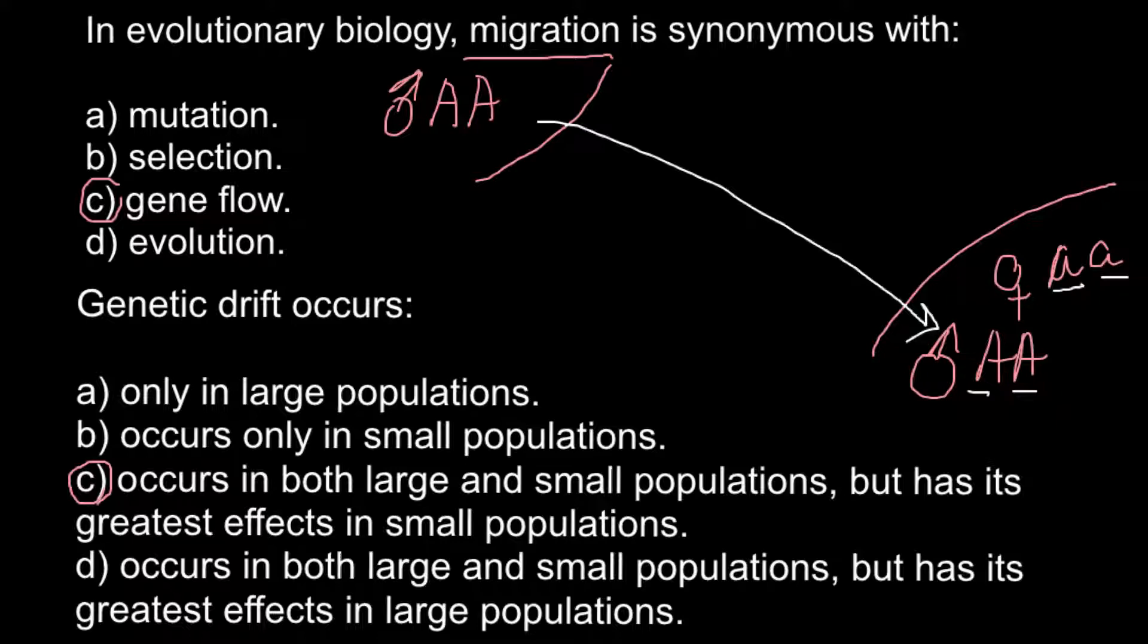Imagine that here, on this community or this island, we would have not one female, but say, two females. So here would be the second one before migration of this male. And how this would change allelic frequency.